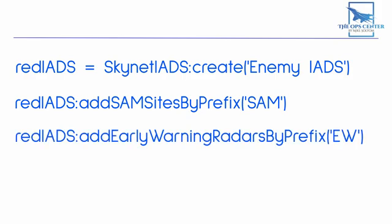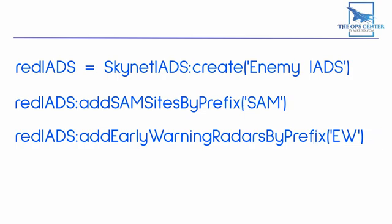Let's add our EW — this works just like our SAM sites. Use this line of code. Any radars with the prefix EW will then get added to the IADS and become the early warning for the network. Lastly, we need to start up the IADS and we do that with this simple command. With these four lines of code out of the way, we're done with our Lua file.